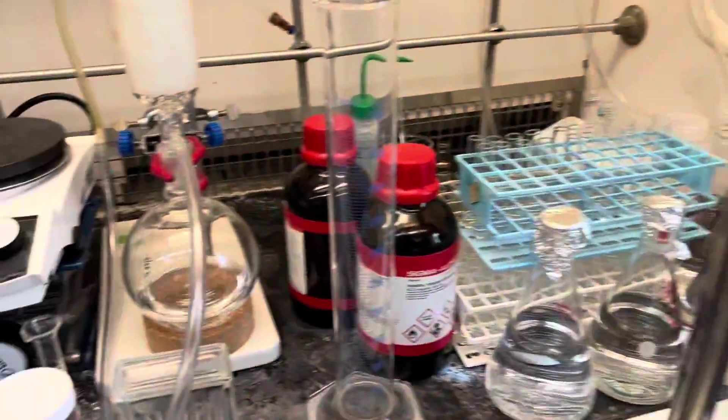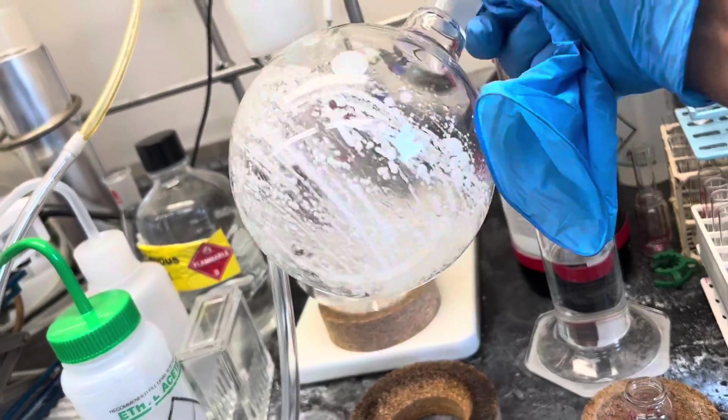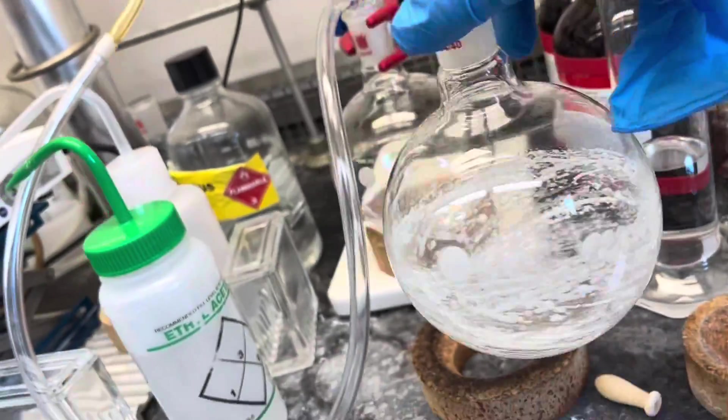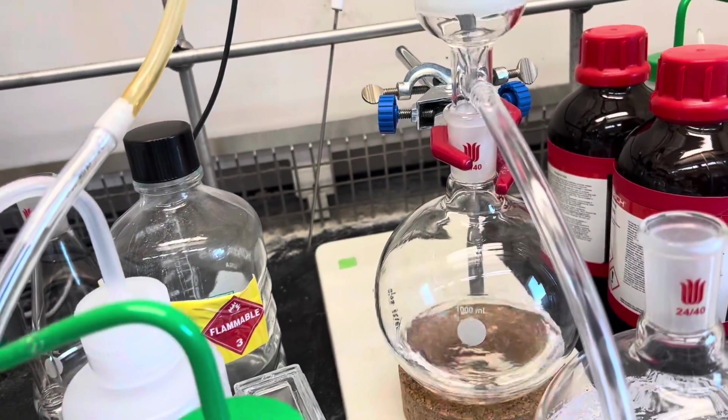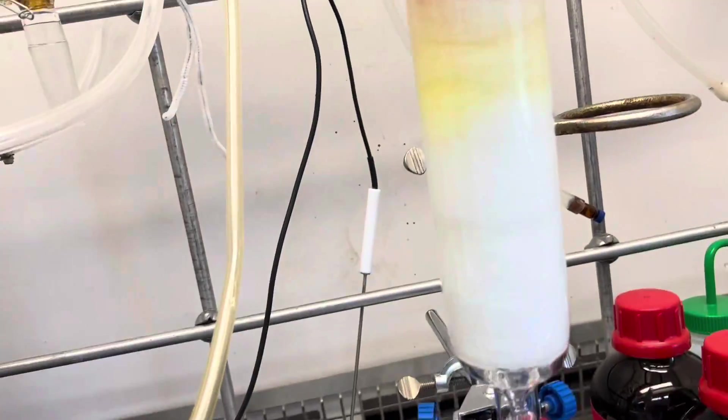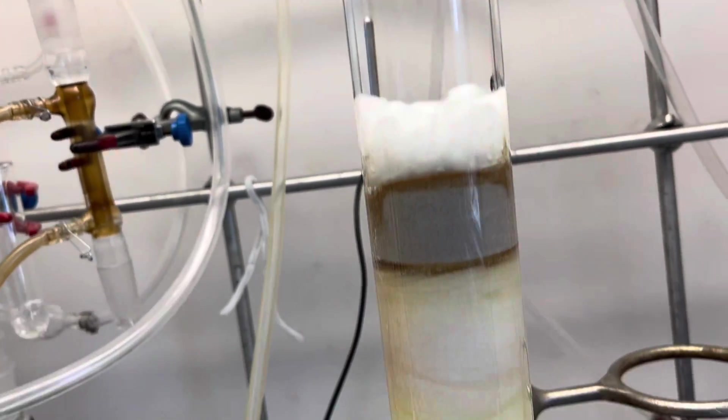Now you can see in my first flask I already have my compound as a pure product because I checked my TLC. By this way I will be collecting different fractions and I will always check the TLC to make sure that all compounds are out.